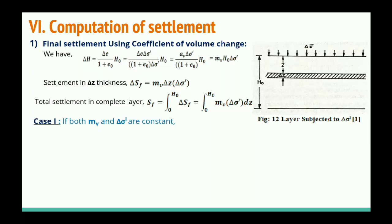Now we calculate the total settlement considering different cases, because under the integration there are two parts: MV and Δσ'. Case 1: if both MV and Δσ' are constant throughout the depth, we can take them outside the integration and integrate from 0 to H₀, giving the final settlement as MV × Δσ' × H₀. This formula applies only when both MV and Δσ' are constant for the full H₀ thickness.